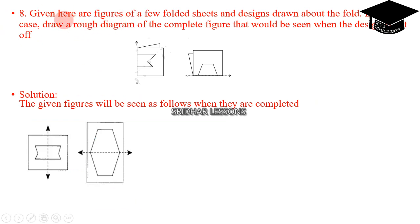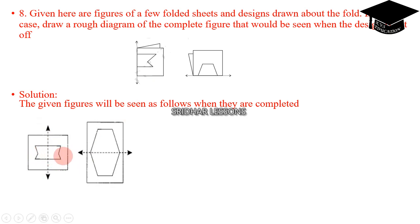Question number 8: given here are figures of a few folded sheets with designs drawn about the fold. Draw a rough diagram of the complete figure that would be seen when the design is cut. For picture one, if we draw a line vertically, the left and right sides show symmetry. For the second picture, if we draw a line horizontally, the top and bottom of the picture show the line of symmetry. With this we have completed this exercise. Thank you.